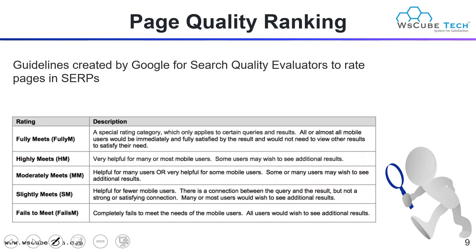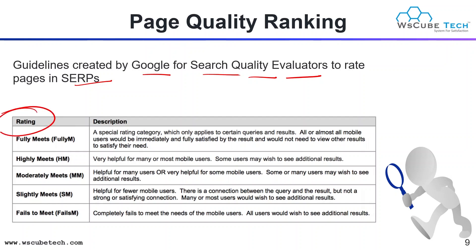Next we have page quality ranking. These are the factors considered by search engines to rank your website high on Google search engine result pages. These are guidelines created by Google for search quality evaluators to rate pages. The first rating is 'Fully Meets' — a special category which only applies to certain queries and results where all or almost all mobile users would be immediately and fully satisfied by the result and would not need to view any other result.